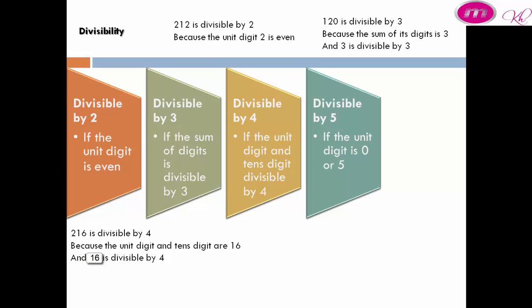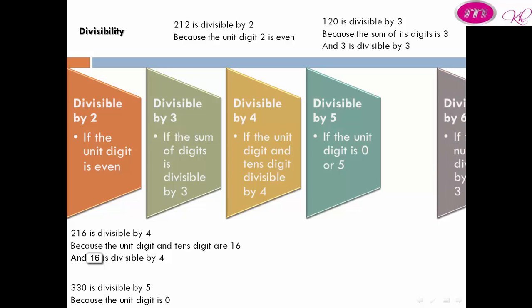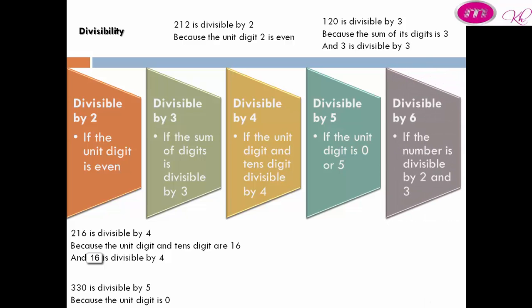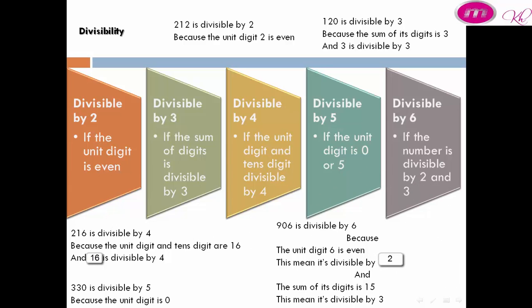Divisible by 5: a number is divisible by 5 if the unit digit is 0 or 5. For example, 330 is divisible by 5 because the unit digit is 0. Divisible by 6: a number is divisible by 6 if the unit digit is even, meaning it is divisible by 2. For example, 906.